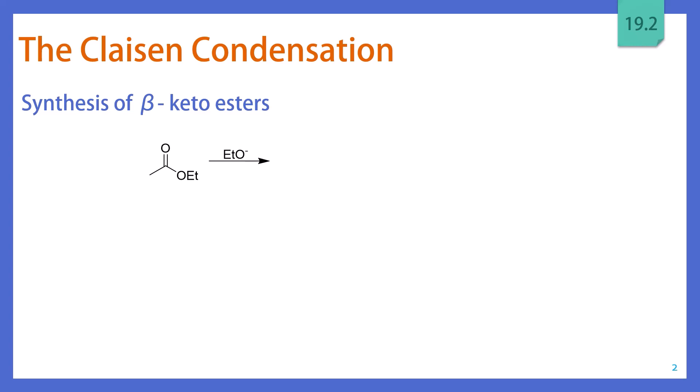Now this is going to start with an ester, such as ethyl acetate, and you introduce an alkoxide base that matches your ester. And what this is going to do is deprotonate your ester so that you end up creating an enolate, which is something we learned how to do in the last chapter.